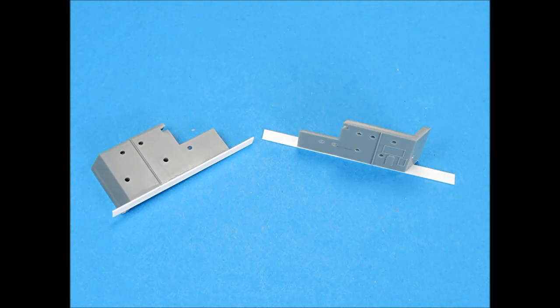These superstructure sides are from the Tamiya 1 to 350th scale Missouri. They weren't high enough, so thin strips of plastic were added to add some height to these parts.